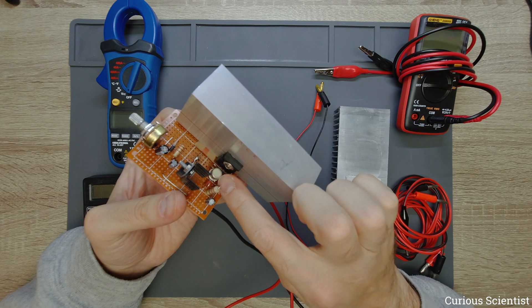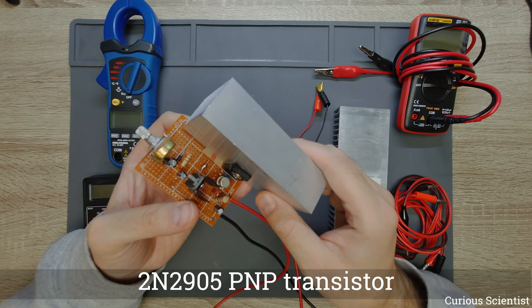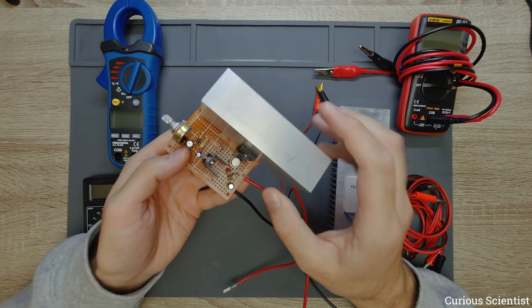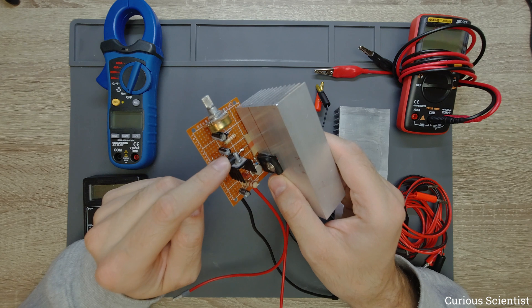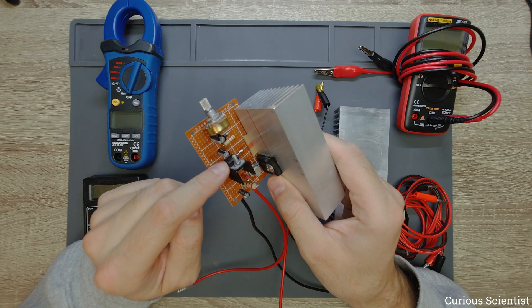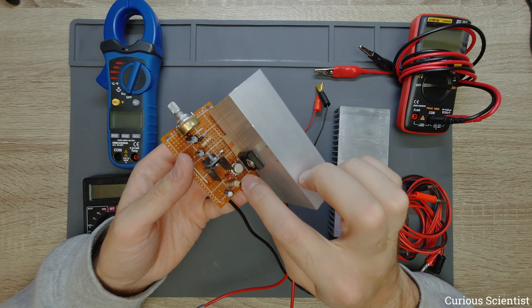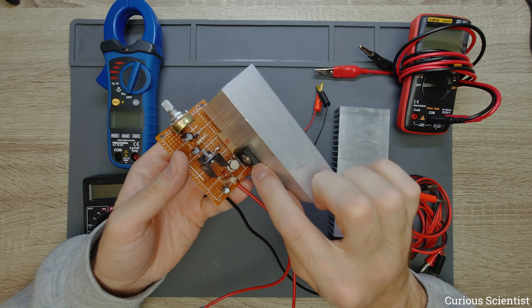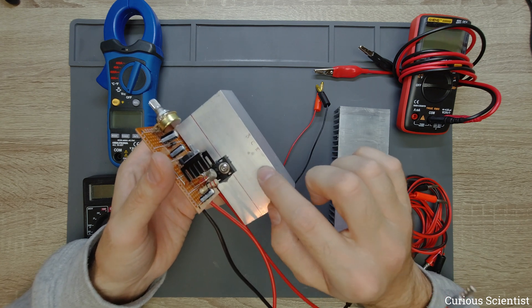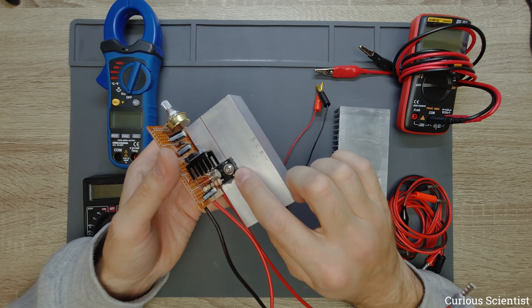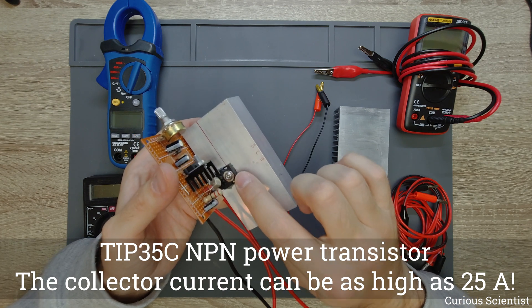Here I use a PNP transistor. This is a 2N2905 PNP transistor which is being switched by the input pin of this voltage regulator. And then this PNP transistor switches an NPN transistor which is a power transistor attached to this huge heatsink and this is a TIP 35C transistor.